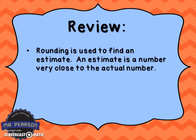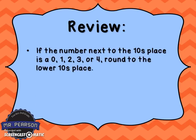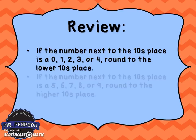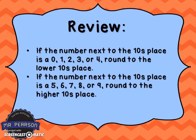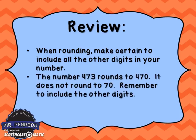Time for review. Rounding is used to find an estimate — a number very close to the actual number. To round to the tens place: first, identify the digit in the tens place. Second, look at the number directly to the right. If that number is 0, 1, 2, 3, or 4, round to the lower tens place. If it's a 5, 6, 7, 8, or 9, round to the higher tens place. When rounding, make sure to include all the other digits in your number — 473 rounds to 470, not just 70.